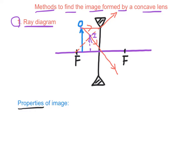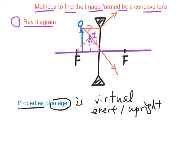The image can be drawn using dotted lines. The properties of the image are: the image is virtual, because no light rays actually converge at point I; the image is erect (upright); and the image is diminished (smaller). Also, the image and the object are both on the same side.